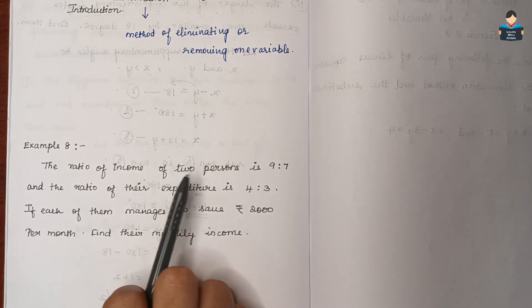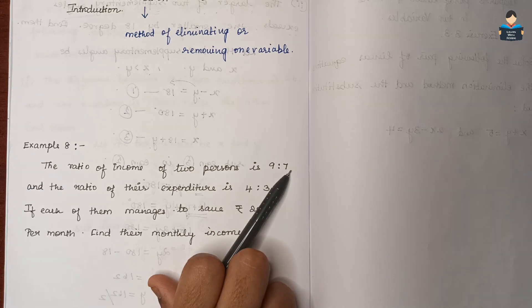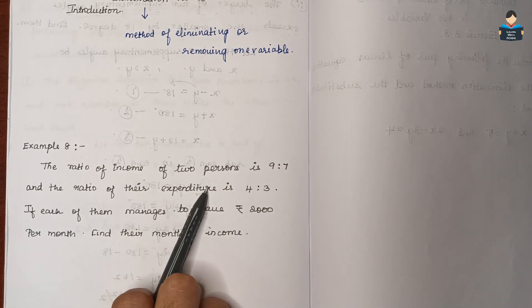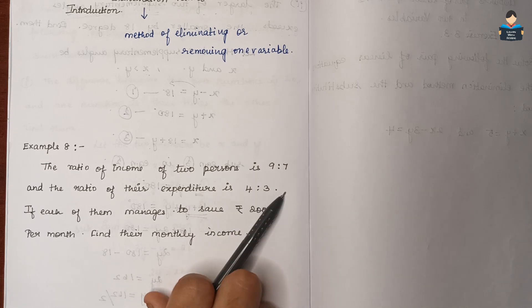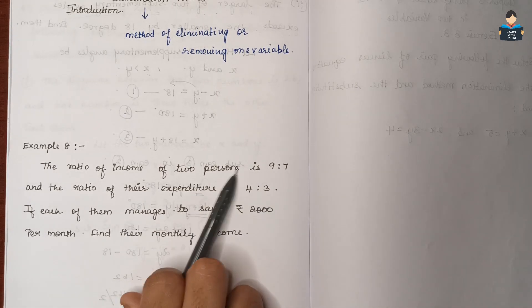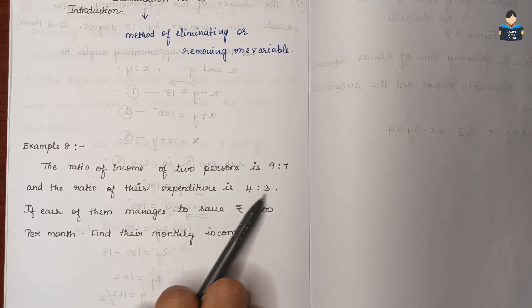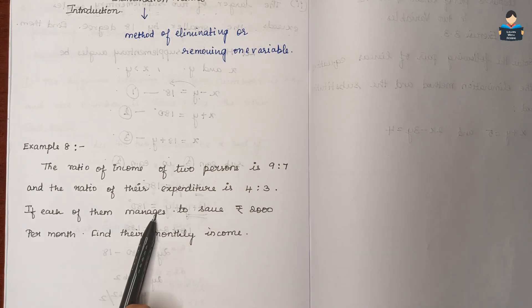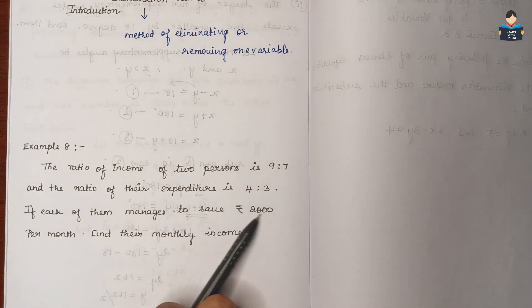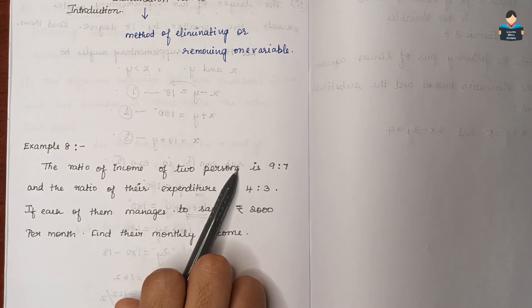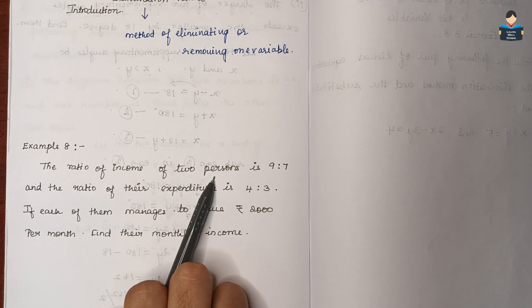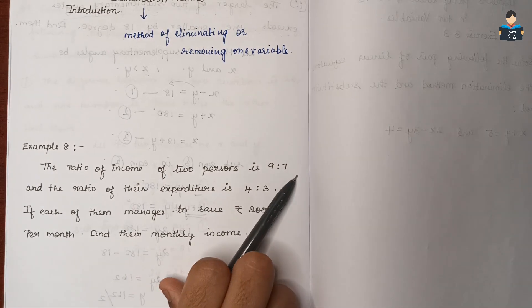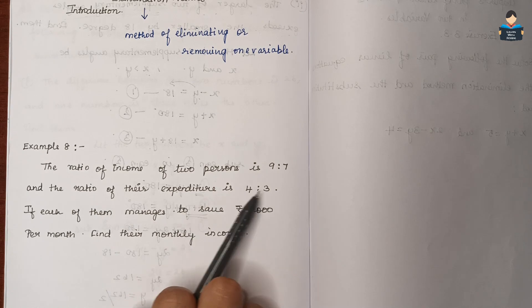Two persons — the income ratio of the two persons is 9 is to 7. The ratio of their expenditure is 4 is to 3.